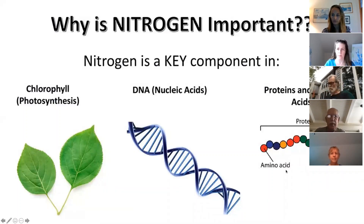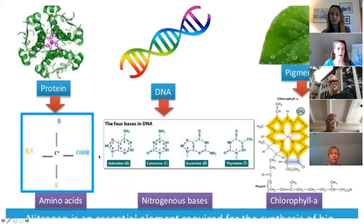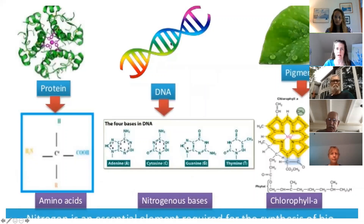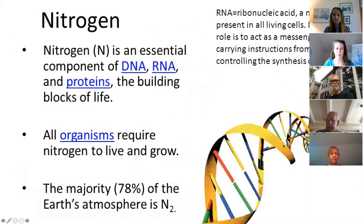If you zoom in and look at the molecules, you can see nitrogen is part of where it comes into the protein — it's part of the backbone. The four base pairs in DNA, it's also in RNA, and it's part of the pigment structure of chlorophyll. Not only is it a building block of life, but plants and animals require it to grow.